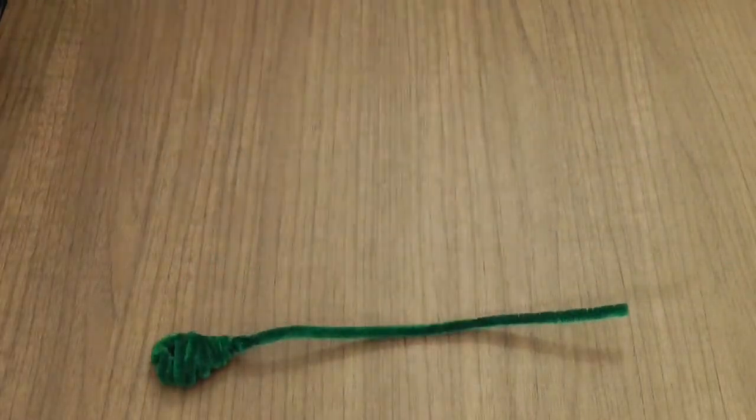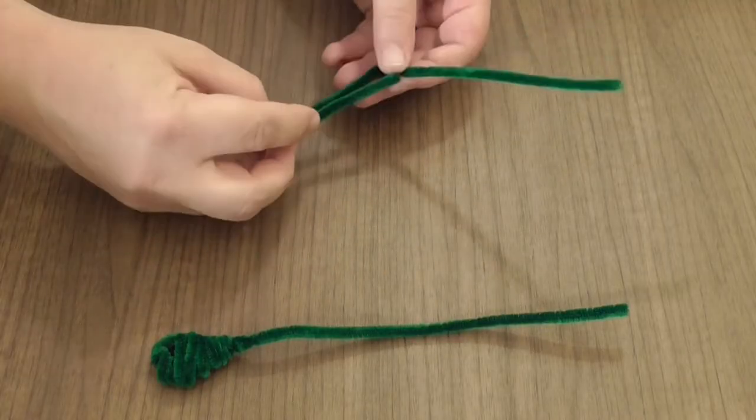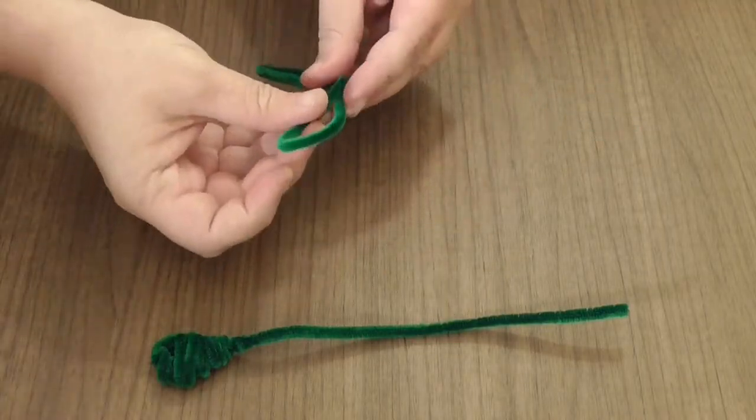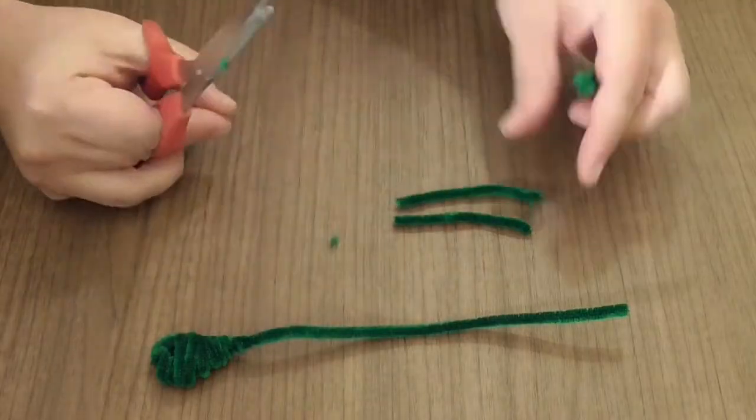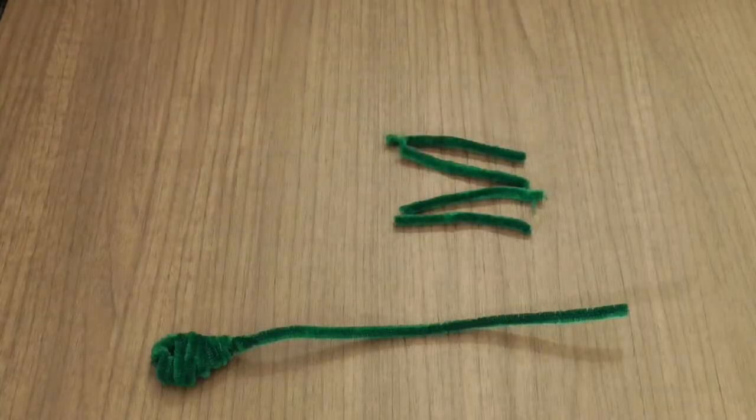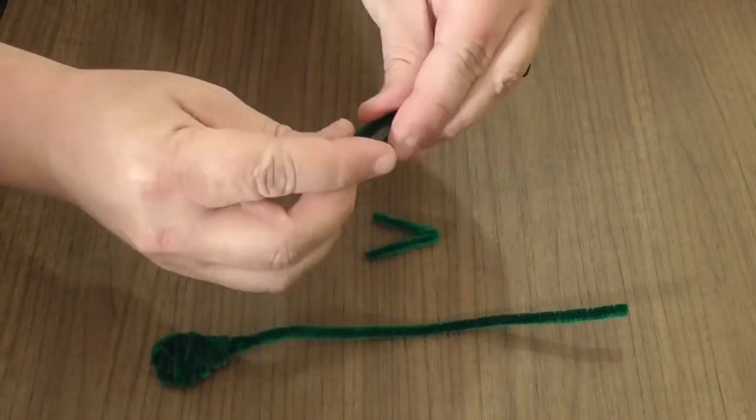Fold another pipe cleaner in half, and then fold each half in half again. Split all four parts apart. Fold two of the quarters in half. These will be your legs.